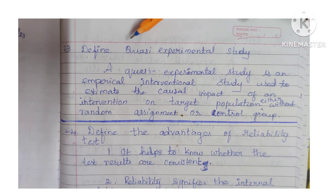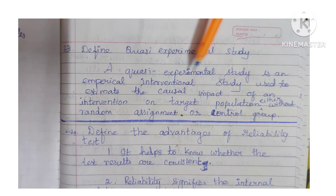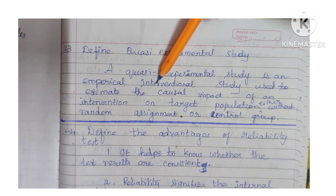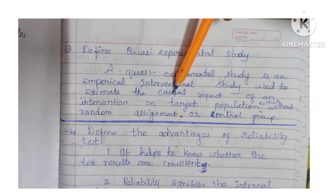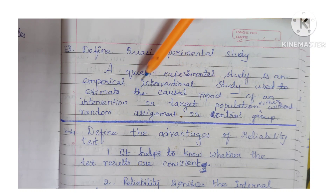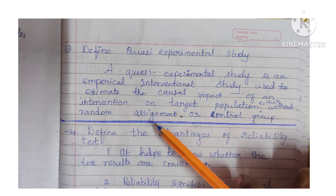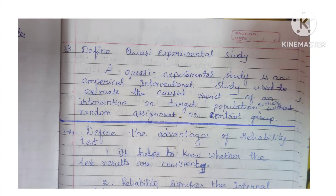Question 23: Define quasi-experimental study. A quasi-experimental study is an empirical interventional study used to estimate the causal impact of an intervention on a target population, either without random assignment or a control group.